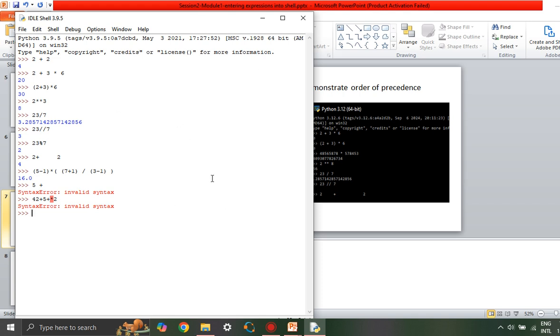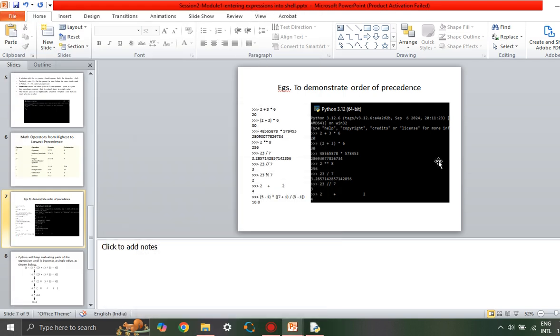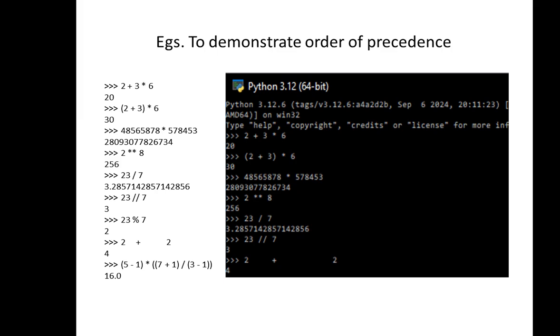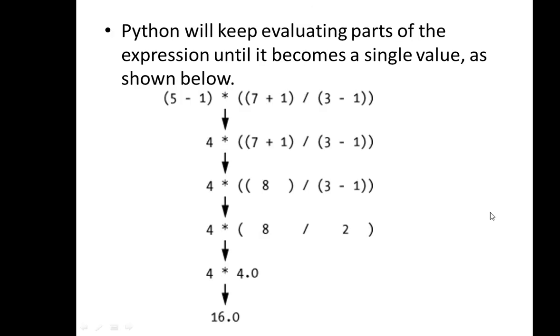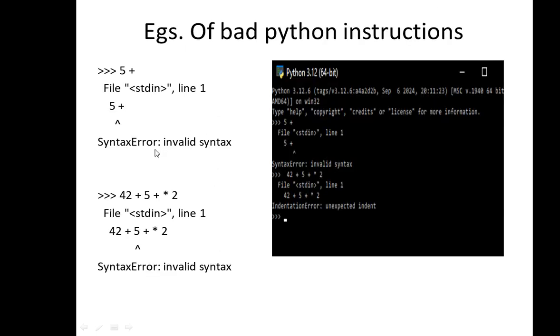Try to do a lot of work on this and try to work on precedence operations. Which is the highest precedence, which is the lowest precedence? Try as many options as possible. This is also available in the video. You can work this out and see how finally we got 16 as the value. These are some examples of bad Python instructions.